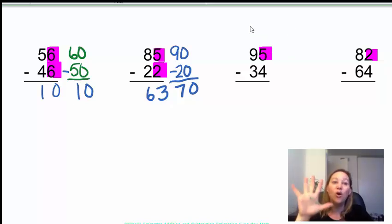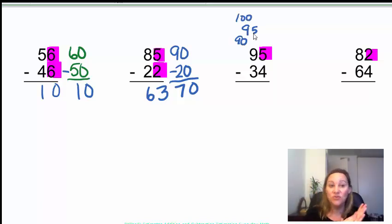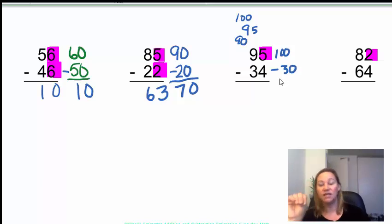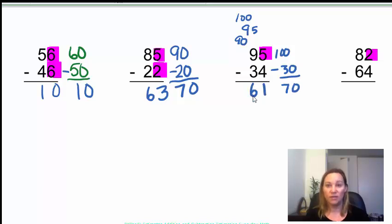95. Oh, remember. Remember what we said. 95 is between 90 and 100. And 5 tells us to go up. So, 95 also rounds up to 100. And 34. 4 tells us to stay. Stay at 30. So, 100 minus 30 is 70. 5 minus 4 is 1. And 9 minus 3 is 6. Yeah. Pretty close. I think we're good.